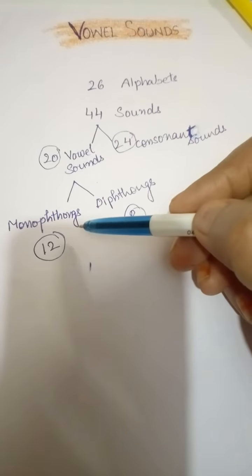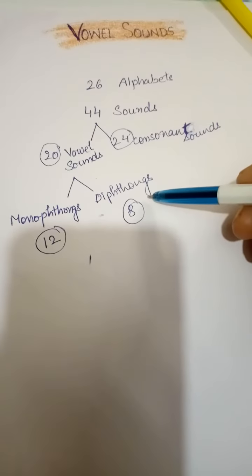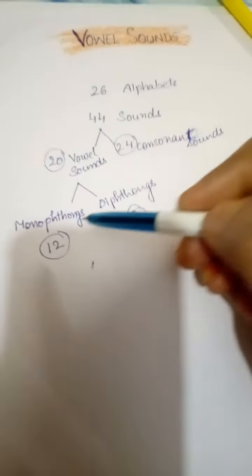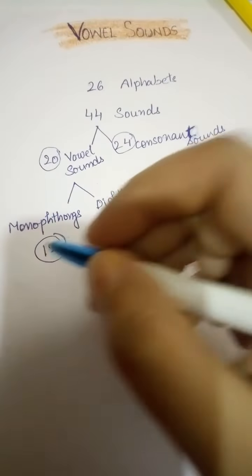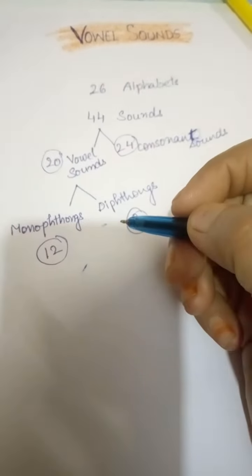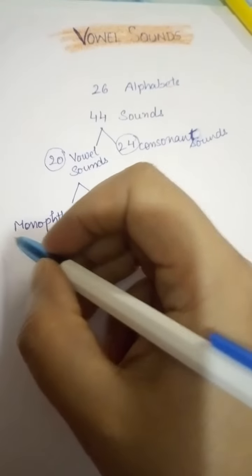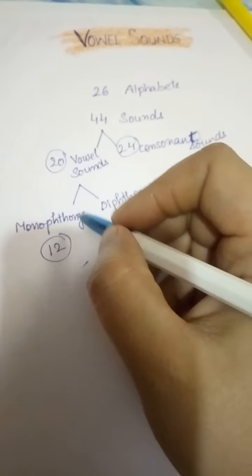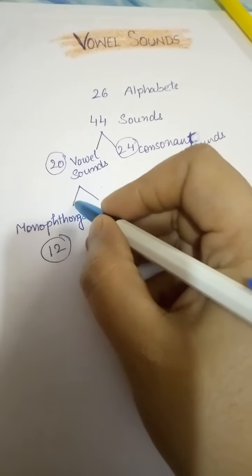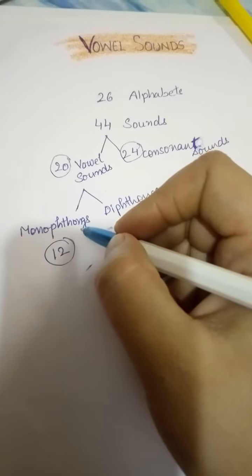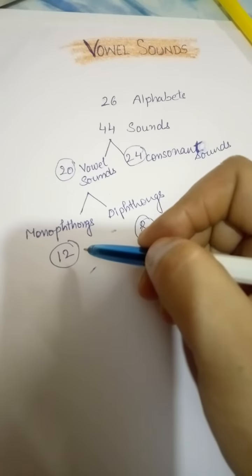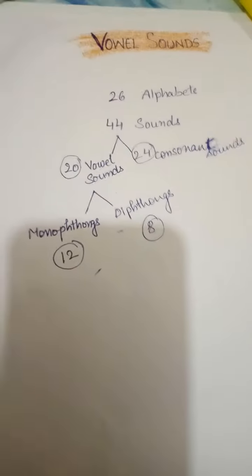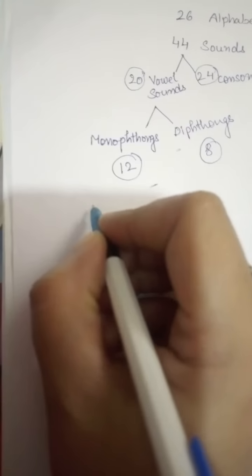Further, the vowel sounds are divided into two main parts: monophthongs and diphthongs. Monophthongs stands for pure vowel sounds. 'Mono' means single, so a monophthong is a vowel having a single sound. So first, we start with monophthongs. The first sound is...